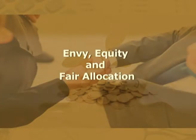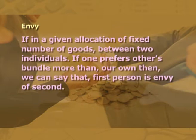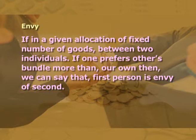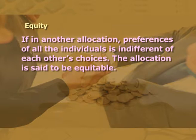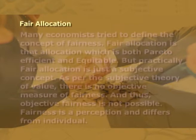Moving on to the next topic that is envy, equity and fair allocation. Let us begin with envy. If in a given allocation of a fixed number of goods between two individuals, one prefers the other's bundle more than their own, then we can say that the first person is envious of the second. Equity: if in another allocation, preferences of all the individuals are indifferent to each other's choices, the allocation is said to be equitable. Fair allocation: many economists try to define the concept of fairness. Fair allocation is that allocation which is both Pareto efficient and equitable. But practically, fair allocation is just a subjective concept. As per the subjective theory of value, there is no objective measure of fairness and thus objective fairness is not possible. Fairness is a perception and differs from individual to individual.